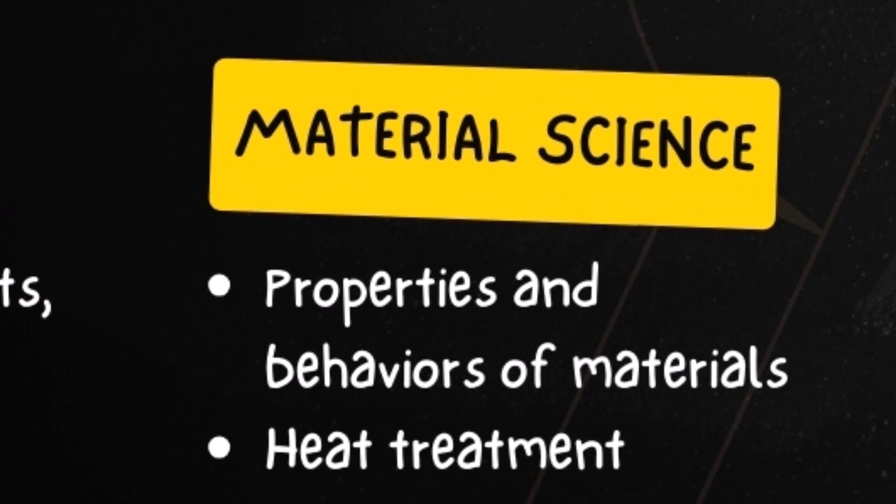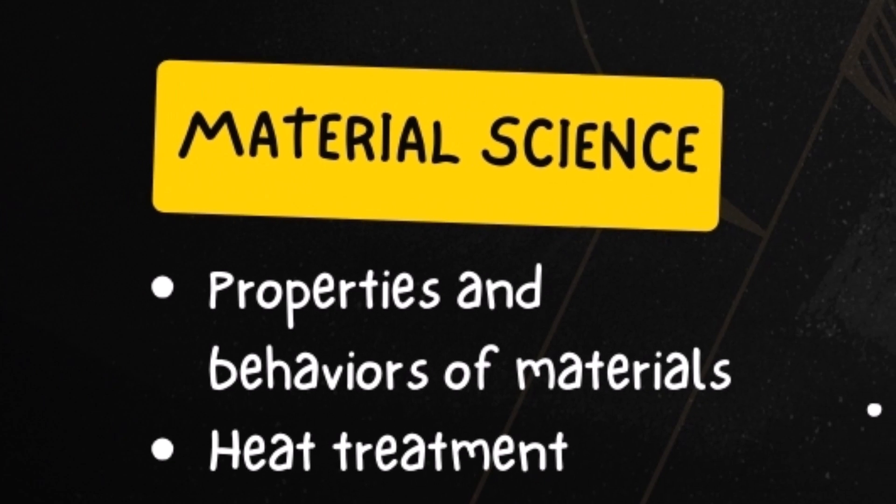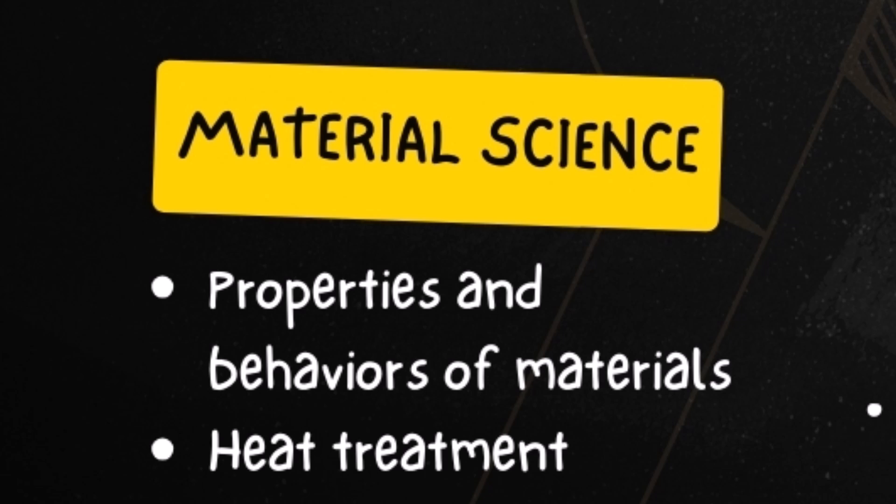Material science studies the properties and behaviors of materials to choose the right material for specific applications, ensuring durability and performance. We must consider the loads affecting the shaft and choose the proper material. Additionally, environmental effects and possible heat treatment must also be considered.